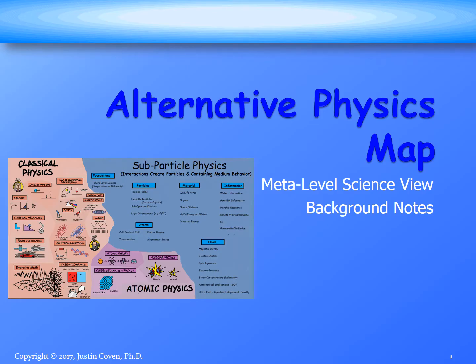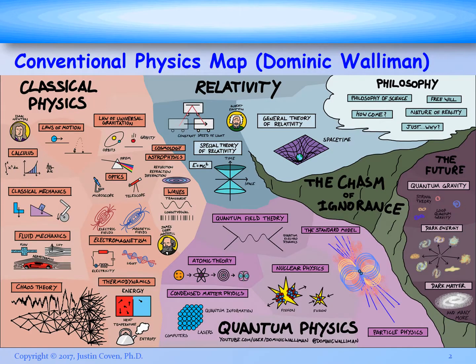This is the fifth in the series of meta-level science videos and we're going to be talking about an alternative physics map based upon meta-level science. The physics map we create is going to be based upon the map done by Dominic Walleman. He did a conventional map and his map is viewable on YouTube where he describes it in some detail, and in the notes section we've got a link to that video.